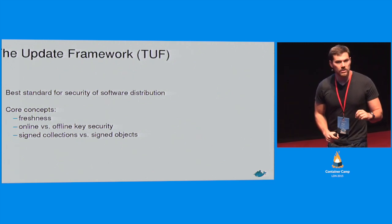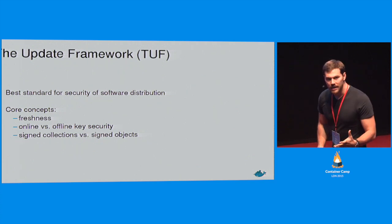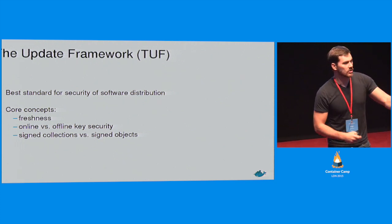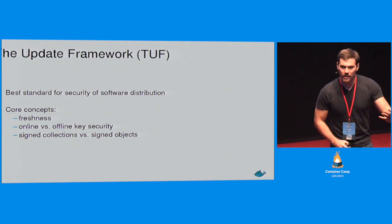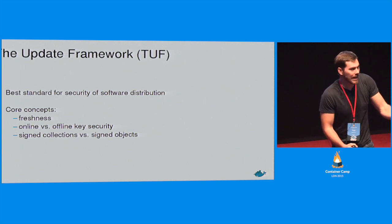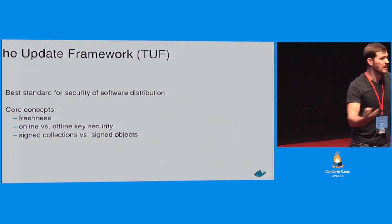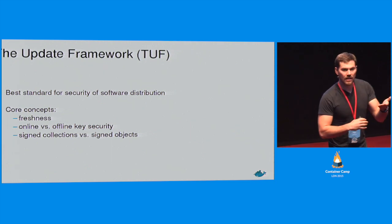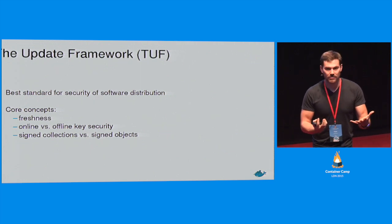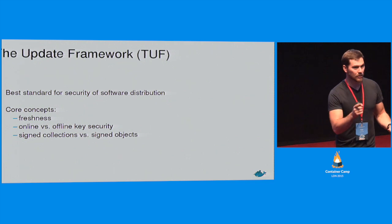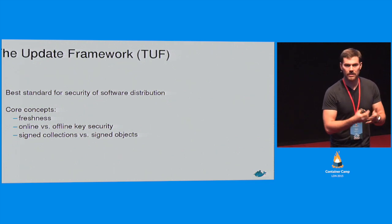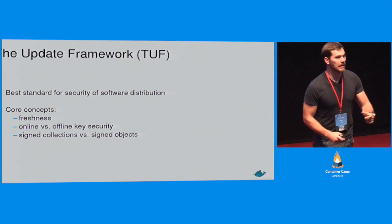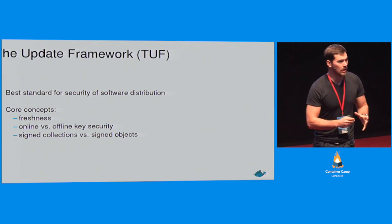The second concept is that TUF allows us to survive key compromise through the notion of online and offline keys. There's a key — equivalent to your GPG key — that is inherently more vulnerable because it has to be online to sign packages. TUF gives us another, more privileged key that you only need for key rotation. Since you're not doing key rotation all the time, you keep that key offline in a vault, a bank, a USB key somewhere. A hacker gets into the system but cannot take your offline key, giving you survivable key compromise.